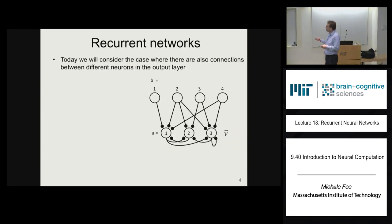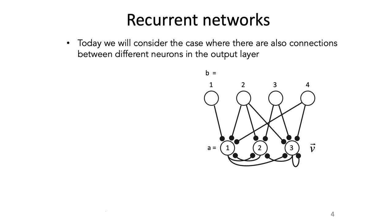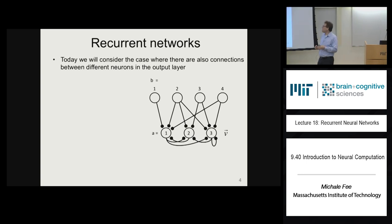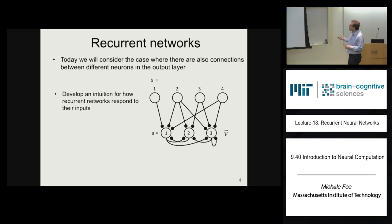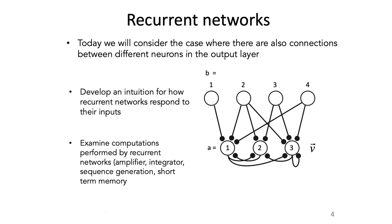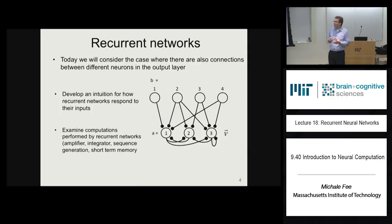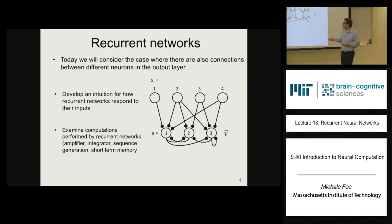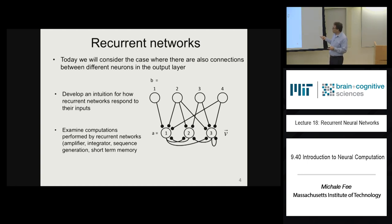Today we're going to look at a new kind of network called a recurrent network, where not only do we have inputs to our output neurons from an input layer, but we also have connections between the neurons in the output layer — these neurons talk to each other. That imbues some really cool properties. Recurrent networks can act as amplifiers in particular directions, as integrators accumulating information over time, generate sequences, and act as short-term memories of either continuous or discrete variables. It's a very powerful circuit architecture.